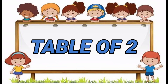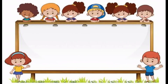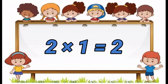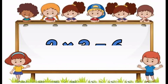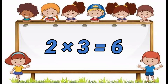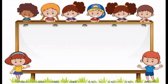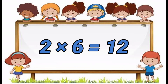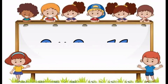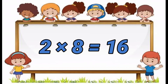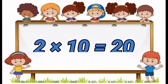Table of 2. 2 1's are 2. 2 2's are 4. 2 3's are 6. 2 4's are 8. 2 5's are 10. 2 6's are 12. 2 7's are 14. 2 8's are 16. 2 9's are 18.